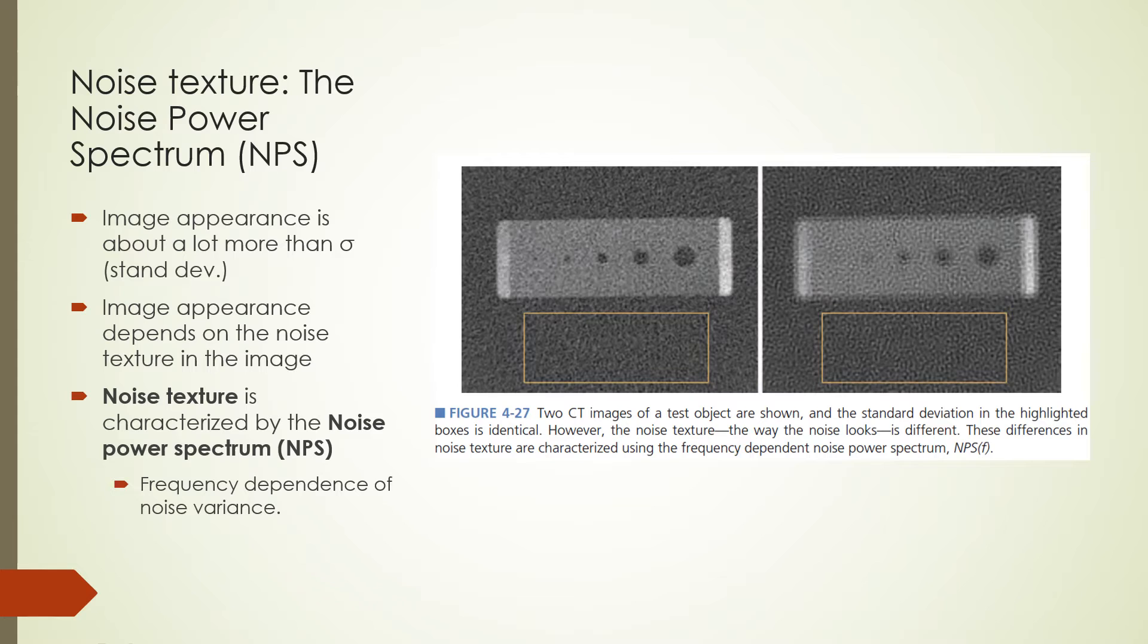On the previous slide, we looked at the noise magnitude in an image as the standard deviation of signal. That simple noise metric is not enough to characterize image noise. It turns out that the way noise looks is just as important as the noise magnitude. The appearance of the noise is called noise texture. Let's look at the two images on this slide. The standard deviations in the highlighted boxes are identical, but the noise looks different.